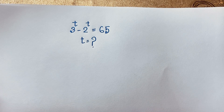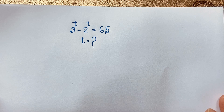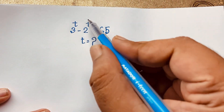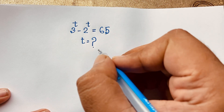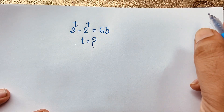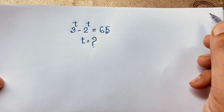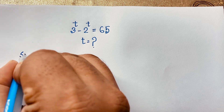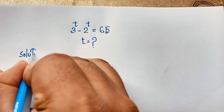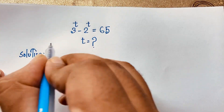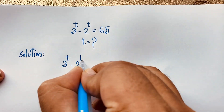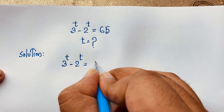Hello everyone, welcome to Russia's Classroom. Today we have solved an interesting viral exponential math problem: 3 to the power t minus 2 to the power t is equal to 65. T is equal to what? I will solve this question step by step.